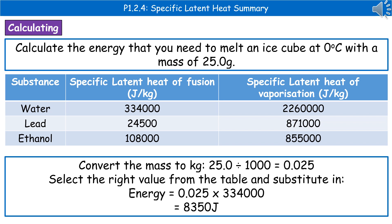Then we need to select the right value from the table. So we're melting ice is what we're doing. Ice is made of water. So take the top row and then because we're melting that's a solid to liquid which means it's a fusion. So the number we need is 334,000.